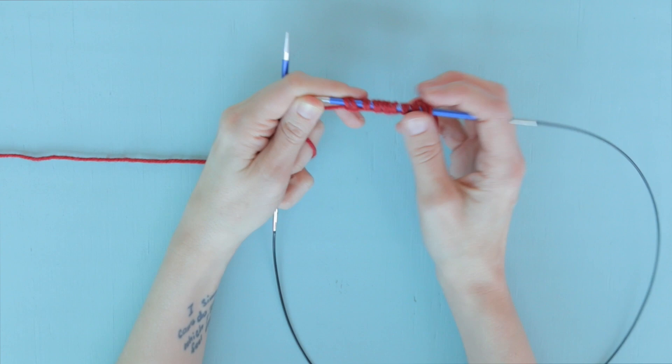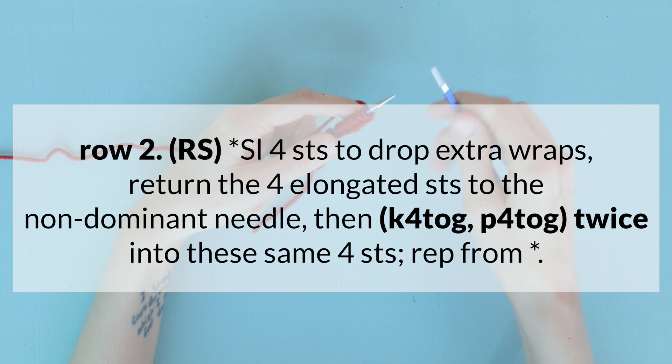On row two, we are going to drop the excess loops and start to create this really beautiful stitch. Now we are on the right side of our work, about to work the next row.